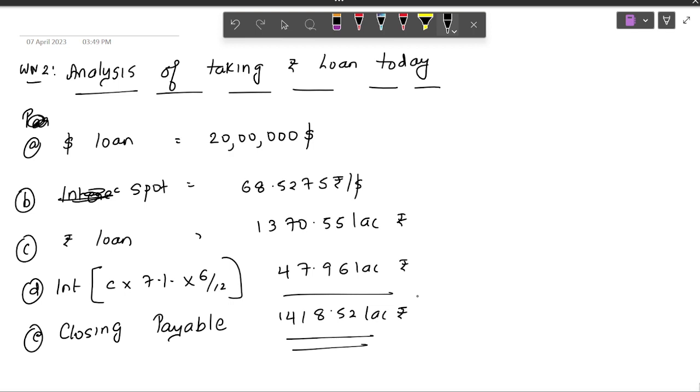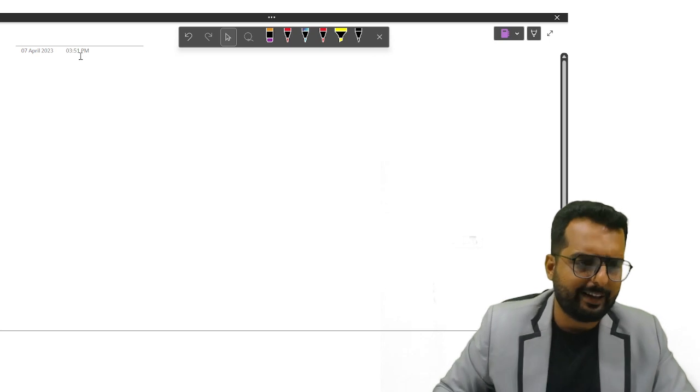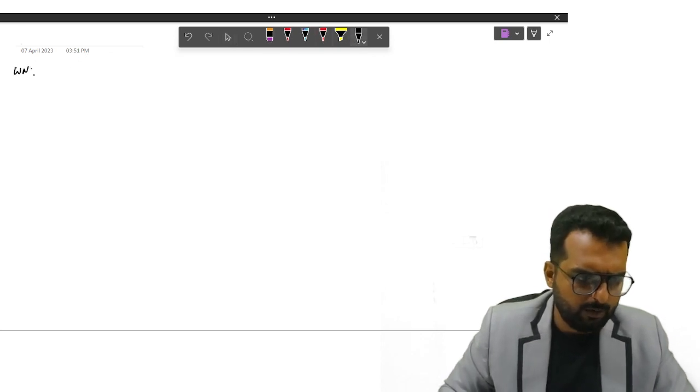Do I get the answer as 1418.52 lakh rupees? Can you write down this in your books now? I will get the answer as 1418.52 lakh rupees. All right friends. I believe you are done with this part. Let me go to the second one. Now, we will write down the next working note.